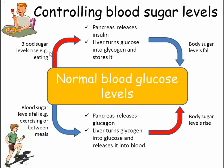If glucose levels rise too high, insulin is released by the pancreas. Insulin is a hormone that works on the liver, where glucose is turned into glycogen and stored. This reduces the level of glucose in the blood.